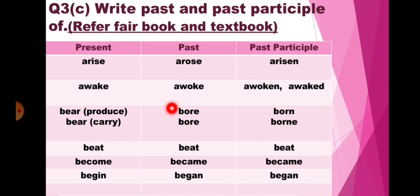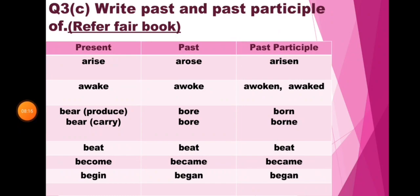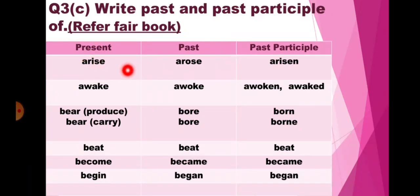Question number 3C: Write the past and past participle forms. Now here you have to refer to your fair book. In present if it is arise, then in past it will be arose, and past participle it will be arisen.